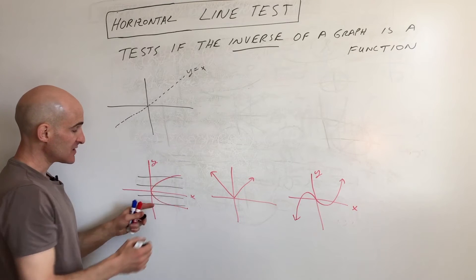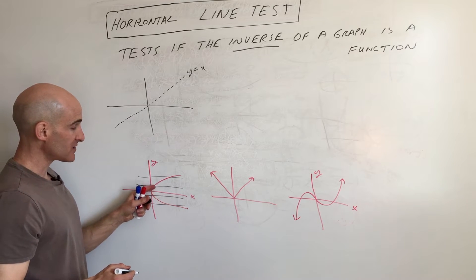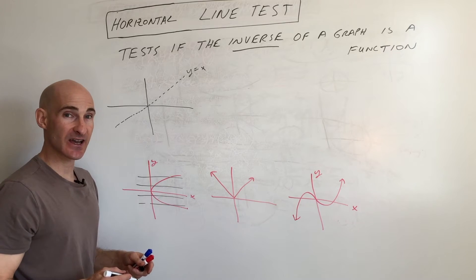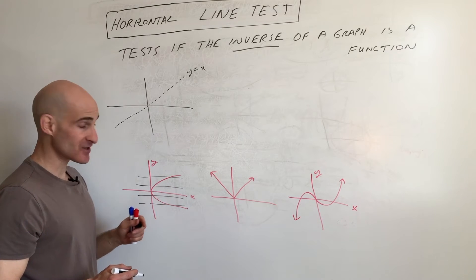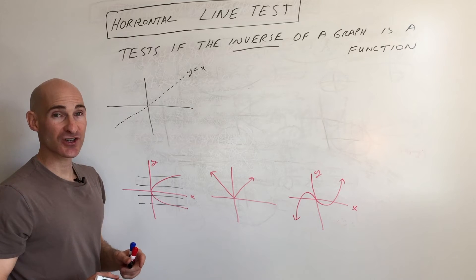You can see here it's only crossing at once, once, once. So this passes the horizontal line test — it means that the inverse of this graph will be a function.